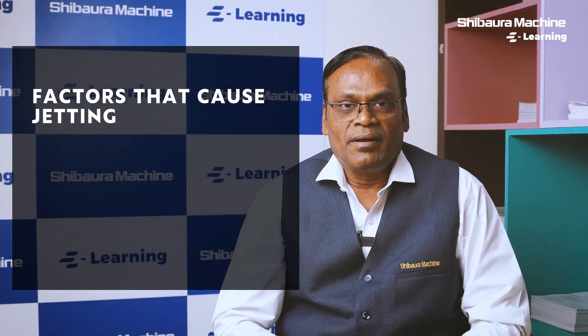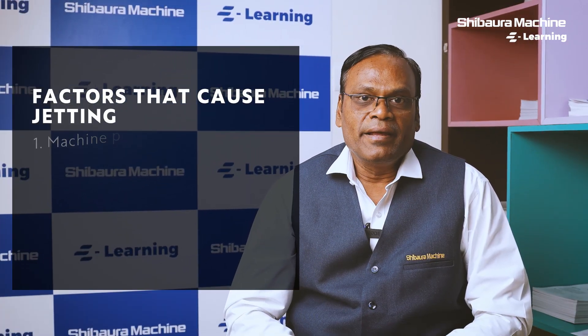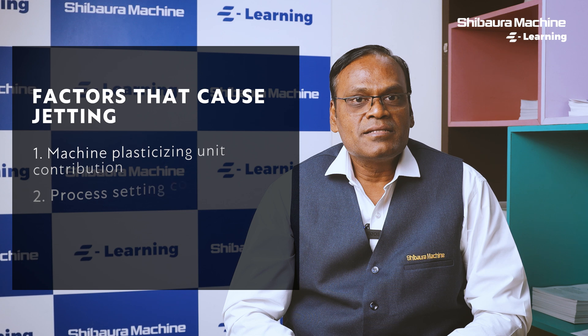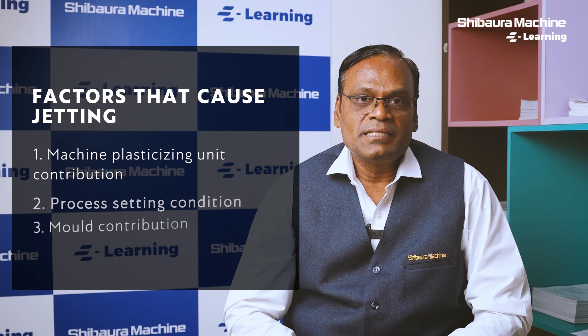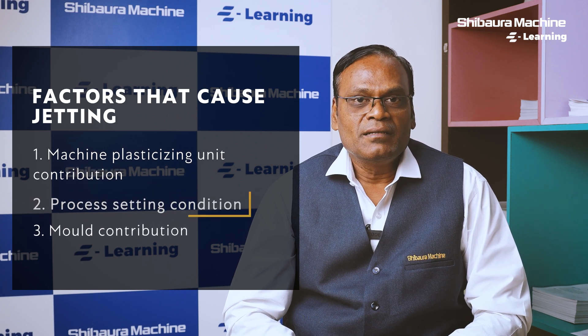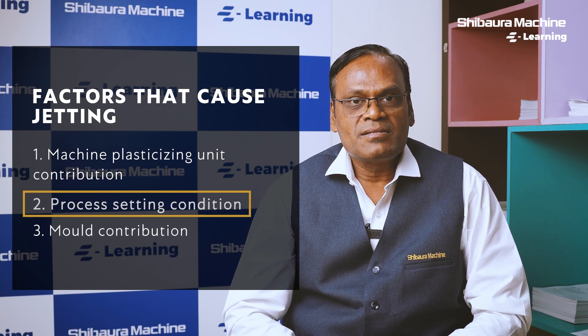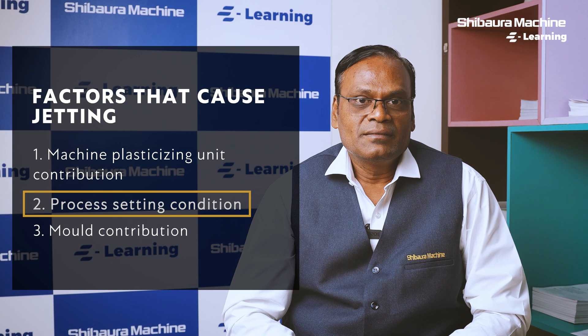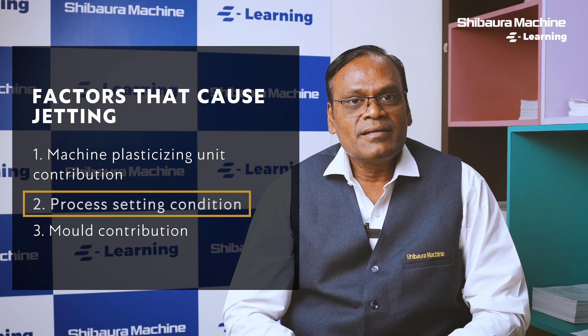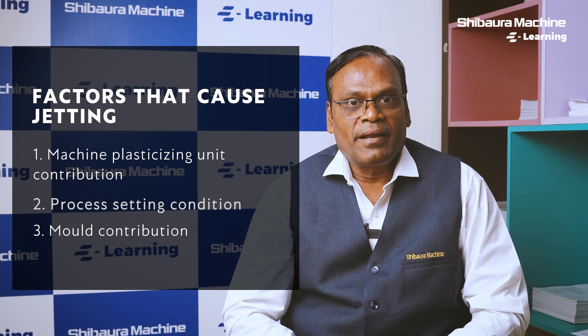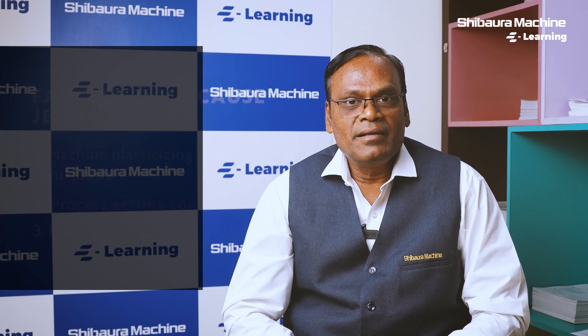Jetting in the molded part is caused by the plasticizing unit of the injection molding machine, by the process settings, or by the polymer. Let us recognize the contributions of each parameter and see how to control it.